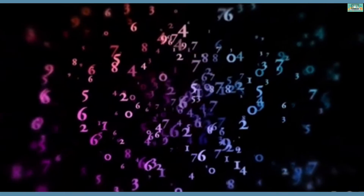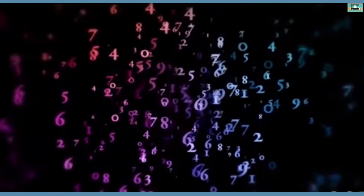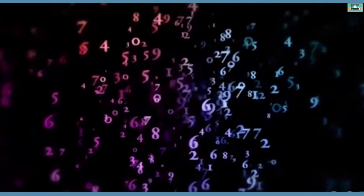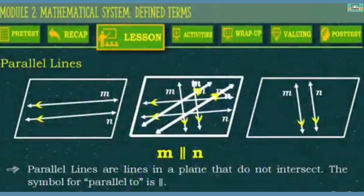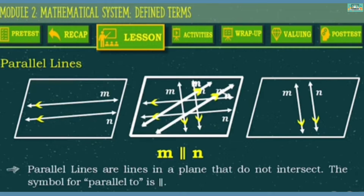Now, let us proceed to the other defined terms. Let's start with these figures. As you can see, the two lines do not meet or never cross each other. These are what you call parallel lines. Parallel lines are lines in a plane that do not intersect. The symbol for parallel is represented by two short vertical lines.